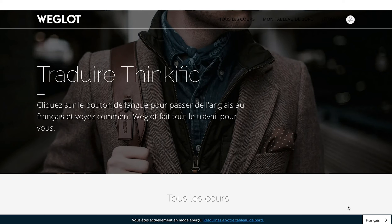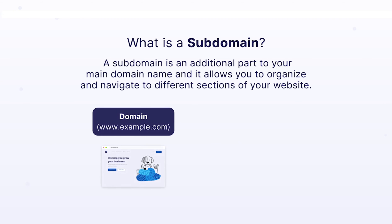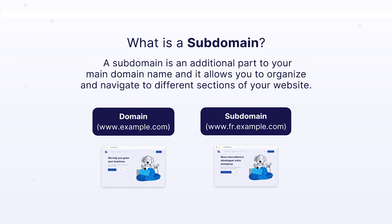Now let's move on to setting up our subdomains. A subdomain is an additional part to your main domain name, and it allows you to organize and navigate different sections of your website — in this case, for your translated pages. Setting up subdomains for language options is great for multilingual SEO, so we highly advise you to do this step. Remember that you'll need a domain name for this part, so if you don't have one yet, you can come back to this when you do.